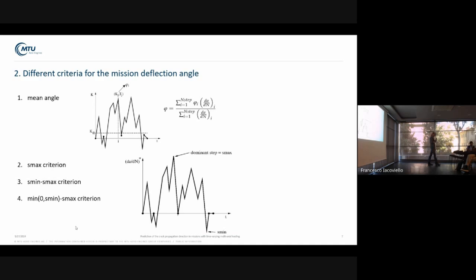You can imagine different criteria. There are probably many more criteria, but these are the criteria we looked at. One class of criteria is that you have different angles for each of those loading points, and the angle of the mission is a kind of mean, weighted by either dA/dN or dA/dN star.